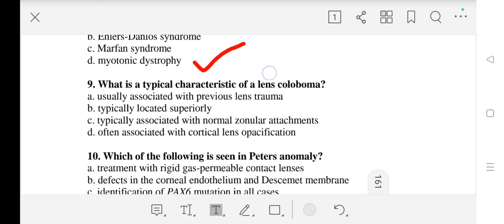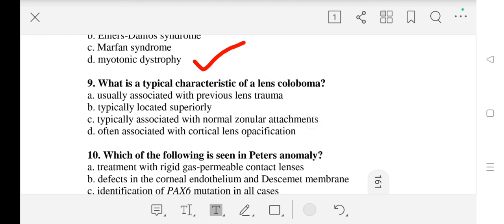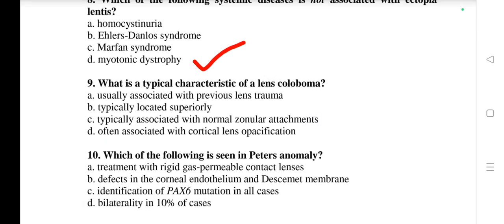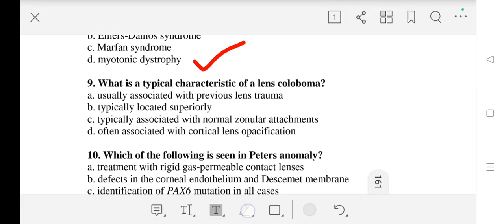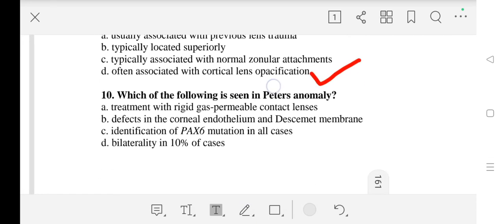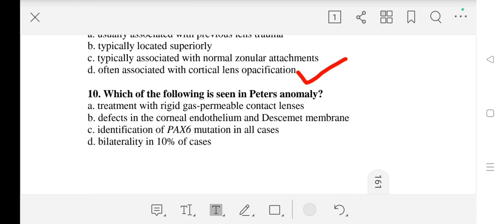Question number 9: What is a typical characteristic of a lens coloboma? The right answer is D - often associated with cortical lens opacification. Question number 10: Which of the following is seen in Peter's anomaly? Our correct answer is B - defects in the corneal endothelium and Descemet's membrane.